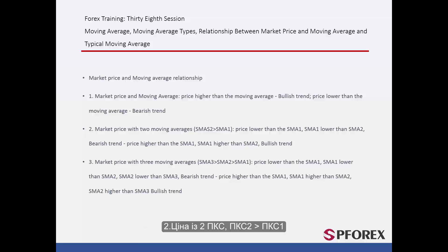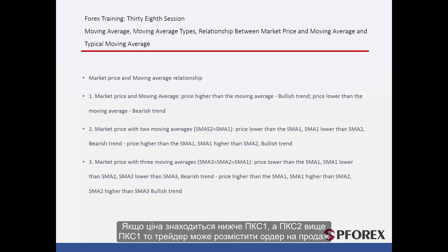Second, Price with two SMAs, where SMA2 is greater than SMA1: if a price is under SMA1 and SMA2 is above SMA1, then a trader can place a sell order. If a price is over SMA1 while SMA1 is higher than SMA2, then an upward trend would be more probable.